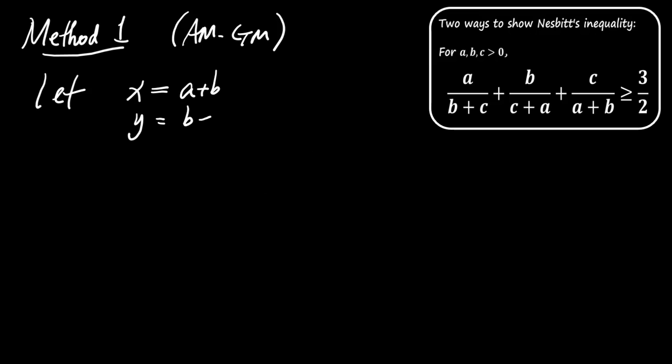We'll let X equal A plus B, Y equal B plus C, and Z equal C plus A. We want to prove the inequality in terms of these new variables. Let J represent the original inequality.